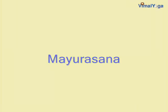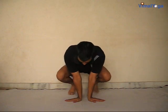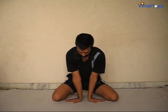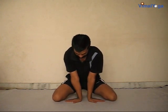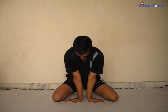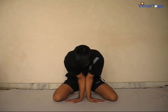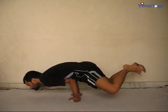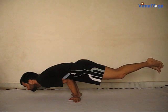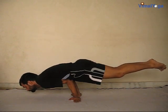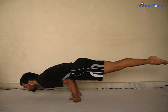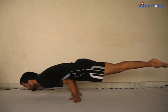Mayurasana: Keeping the knees shoulder-width apart, sit on your toes. Join your elbows and adjust them under the navel. Place your palms on the floor with fingers pointing away from the body towards the left and right sides. Lift your knees and legs, balancing the body weight on your elbows. Now stretch your legs like the feathers of a peacock and stay in this position for a comfortable duration, breathing normally.